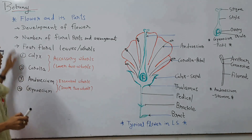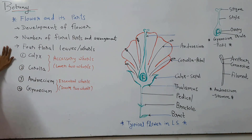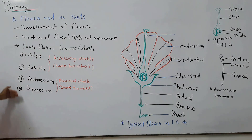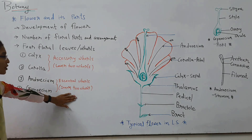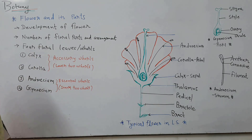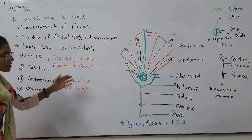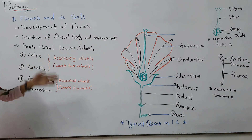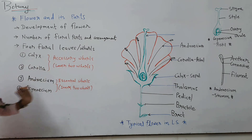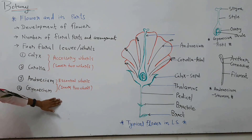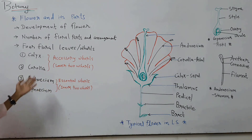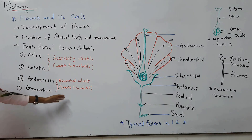The flower has four floral whorls: calyx, corolla, androecium, and gynoecium. Calyx and corolla are the two outer or accessory walls, while androecium and gynoecium are the essential or innermost walls. They are accessory walls because they assist in reproduction by providing protection and performing photosynthesis, nourishing the flower. Androecium and gynoecium are essential for reproduction because they produce microspores and megaspores.